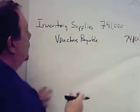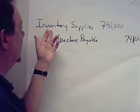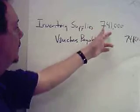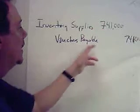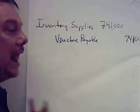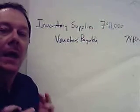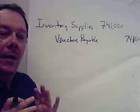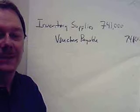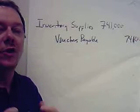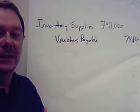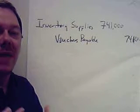Our journal entry balances: debit inventory supplies $741,000, credit vouchers payable $741,000. We'll eventually pay for this. Now, people got stuck at this point — they weren't sure what the last journal entry is. Under the consumption method, we're going to realize the expenditures of the amount of inventory used.